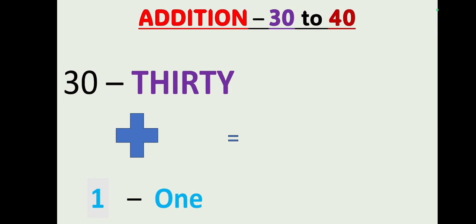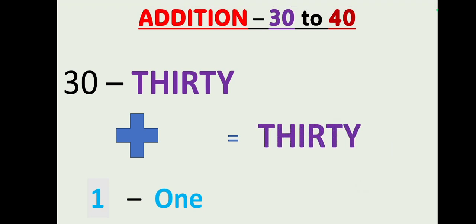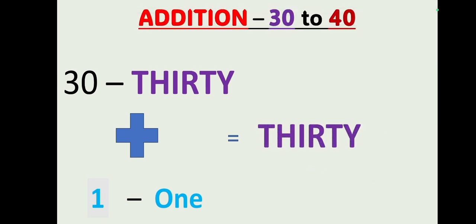First write down the number 30 — T H I R T Y — then write down 1 — O N E — and you get 31. Similarly, you can join 30 with 2, 3, 4, 5, 6, 7, 8, and 9. First you write 30, then write 1; first you write 30, then write 2; first you write 30, then write 3.